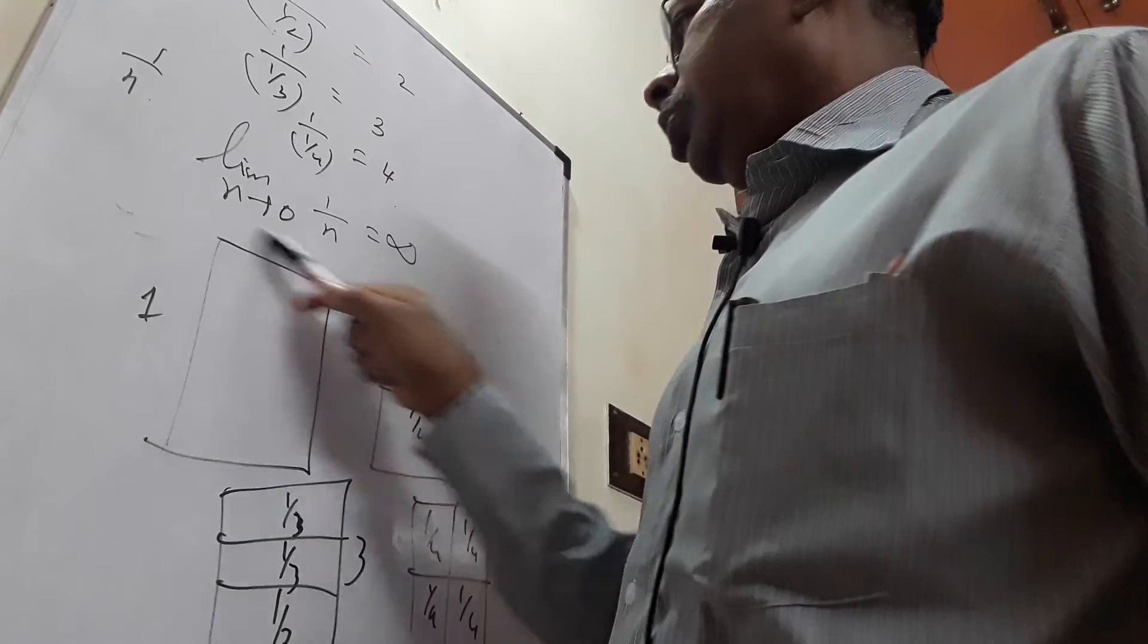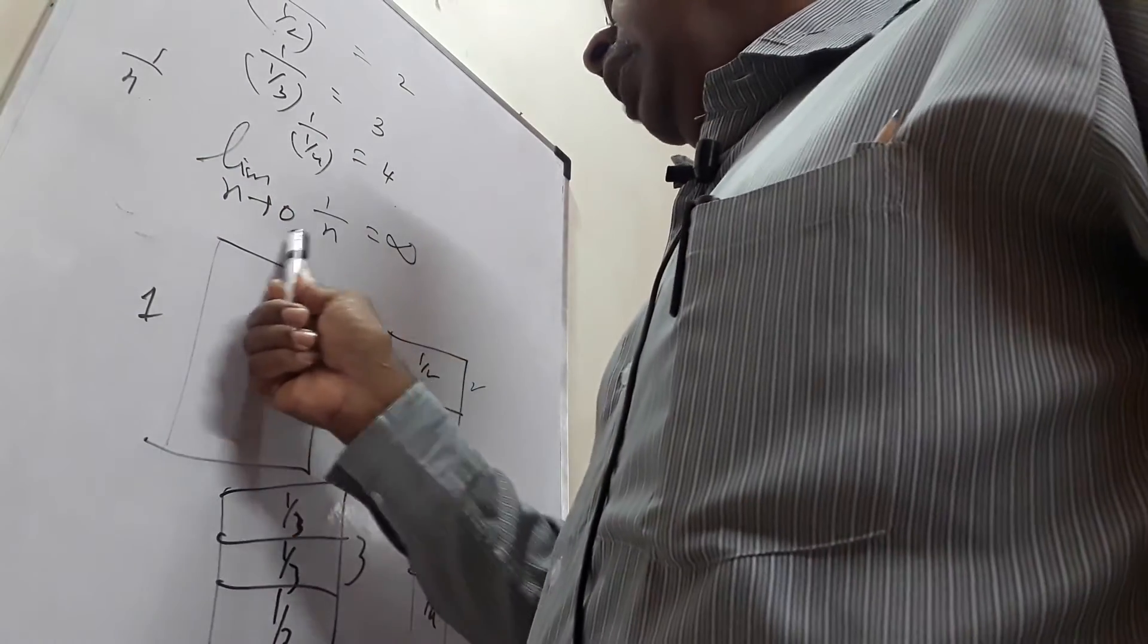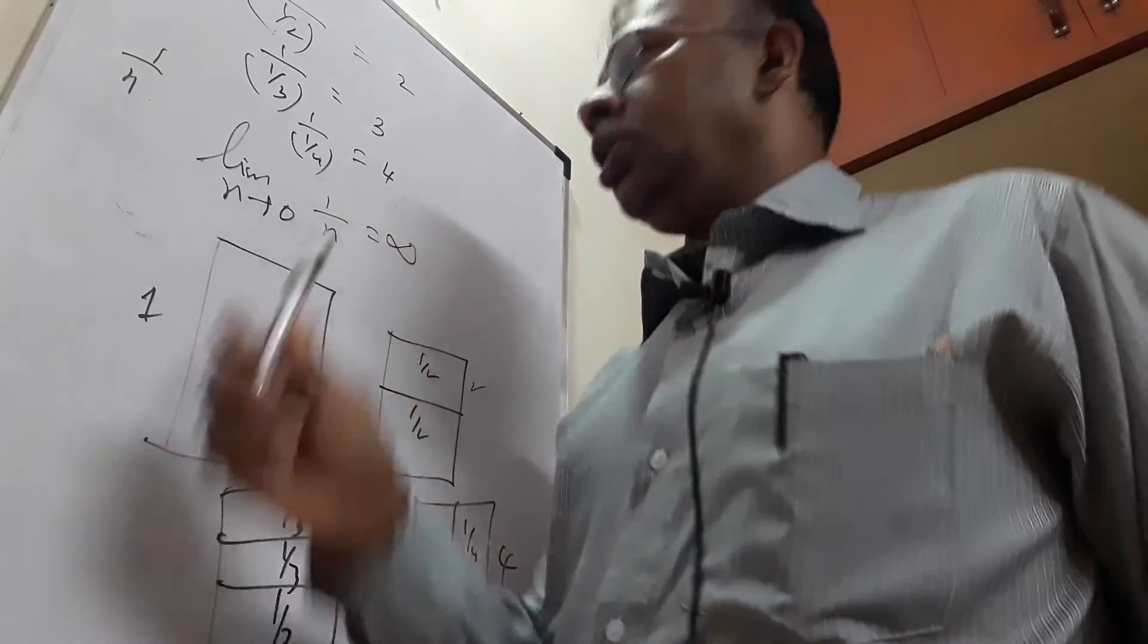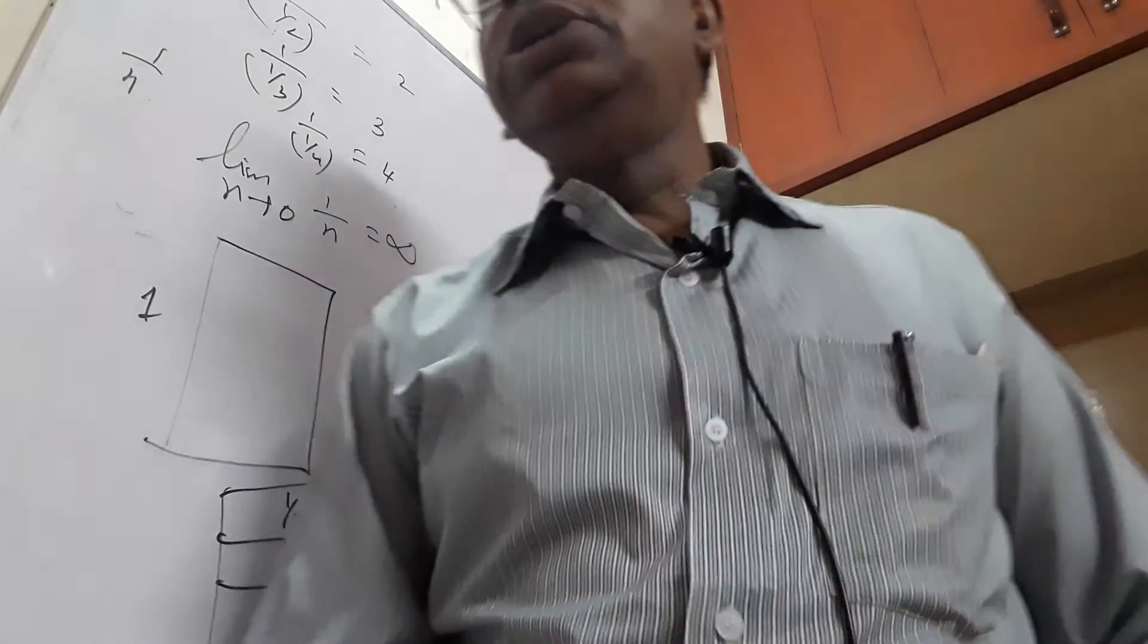Therefore, we come to the conclusion, limit n tends to 0 of 1 by n is equal to infinity. This kind of explanation through paper folding technique makes your job easier to understand such limiting values. Thank you very much.